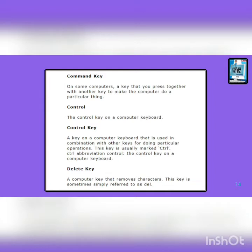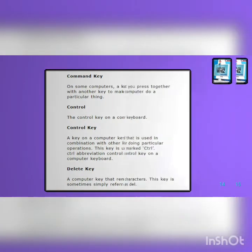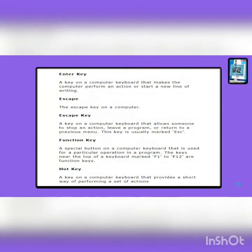Enter key: a key on a computer keyboard that makes the computer perform an action or start a new line of writing. Escape: a key on a computer keyboard that allows someone to stop an action, leave a program, or return to a previous menu. This key is usually marked ESC. Function key: a special button on a computer keyboard that is used for a particular operation in a program. The keys near the top of the keyboard marked F1 to F12 are function keys.